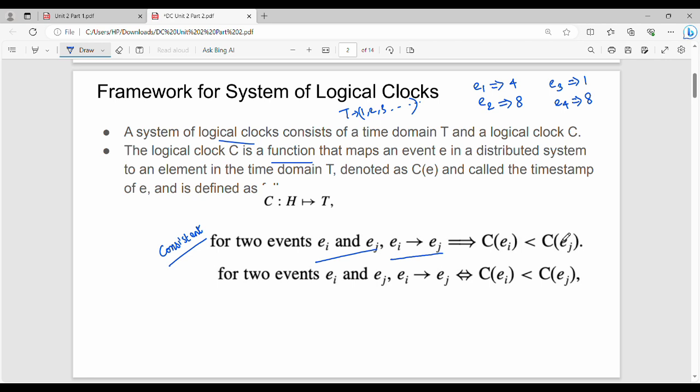Then strongly consistent. The first event is e_a implies e_j, and strongly consistent means double imply. Double imply meaning is e_a implies e_j if and only if C(e_a) is less than C(e_j).